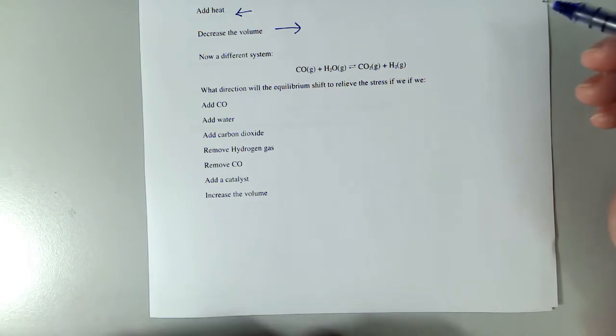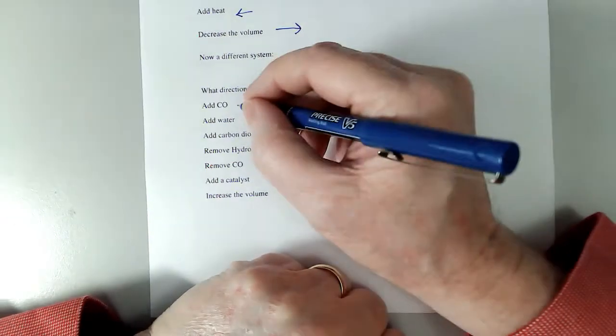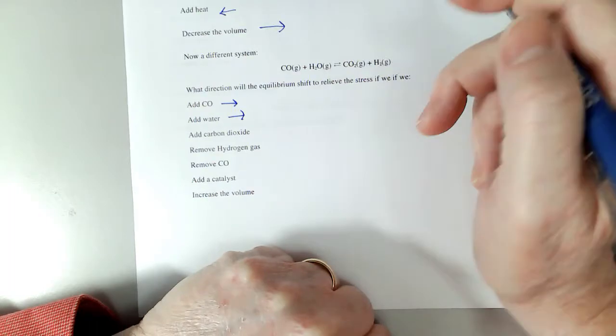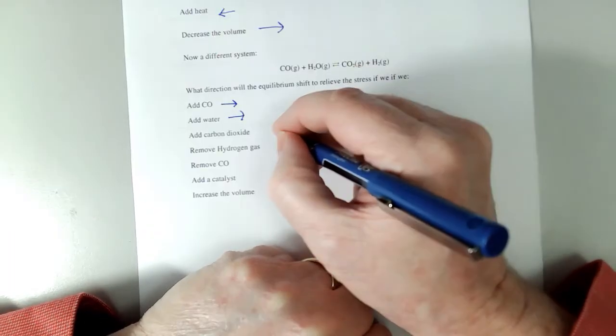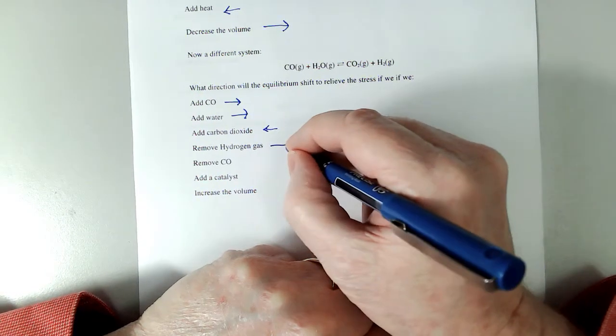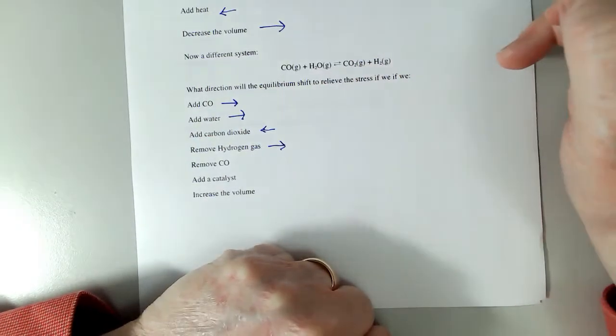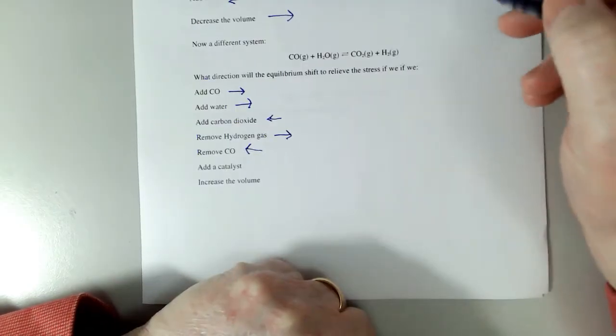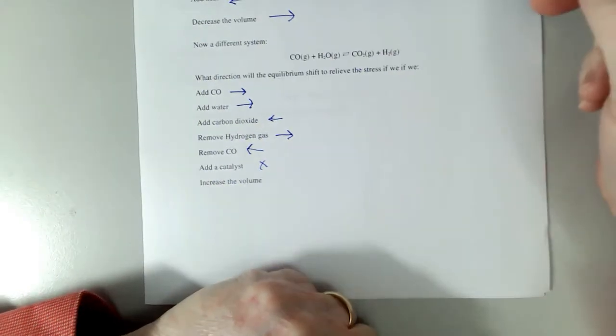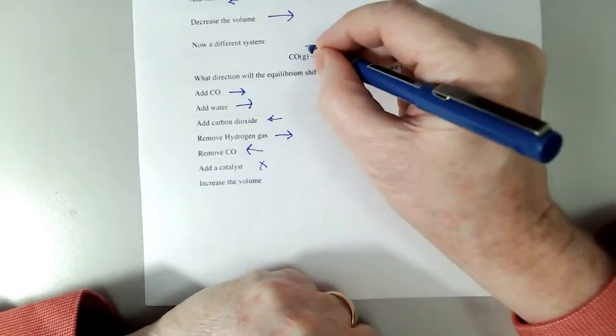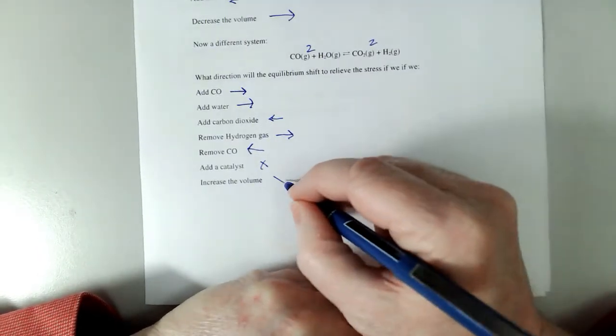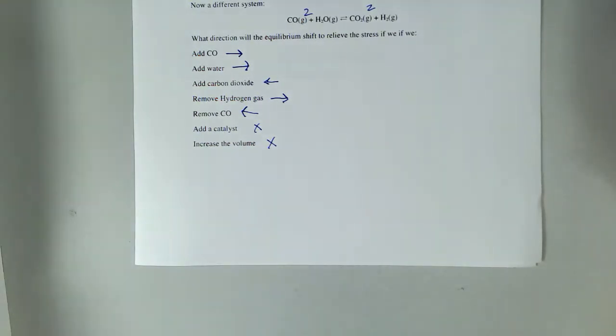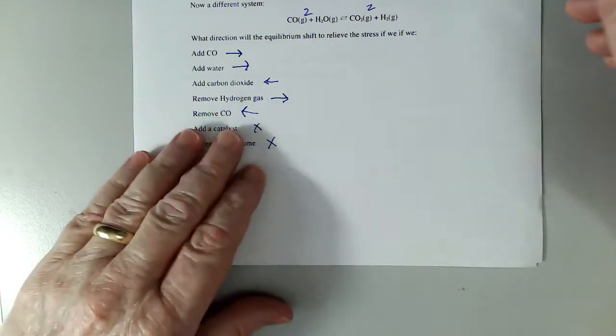And that's the same reaction we're talking about on the first page there. What direction will the equilibrium shift? If we add carbon monoxide, that goes to the right, because it's a reactant. Add water, goes to the right. Add carbon dioxide, well, that's actually a product, so that's going to shift towards the reactants. If we remove hydrogen, we want to replace what we've removed, goes to the right. Remove carbon monoxide, replace what we've removed, goes that way. We add a catalyst, no change. Now, interesting, the volume. 2 moles of gas and 2 moles of gas. So, since it's the same number of moles of gas on both sides, there will not be any actual effect this time by increasing the volume.